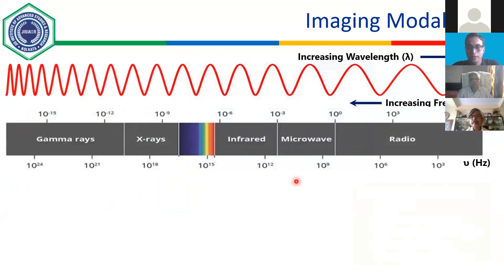Let's look at how these different imaging modalities can cover a big spectrum of imaging the human body from tissue to organ levels, and focus on the electromagnetic spectrum which takes a broad shape ranging from radio frequency to X-ray regions.